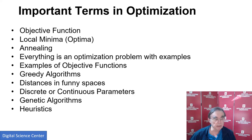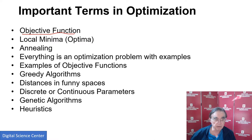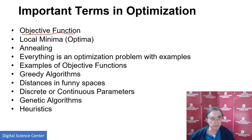Here are some terms which we'll discuss in the future slides. Objective function, energy, or loss function — that's the thing that you're minimizing. Then we have local minima or optima. I will always use minima, as most people do in this field, even though if you just change the sign of the function, minima become maxima. Energy functions are always minima.